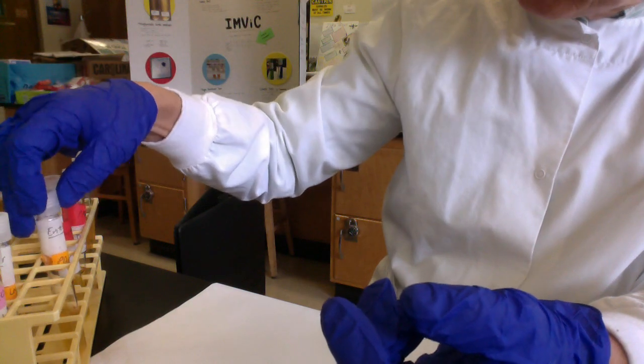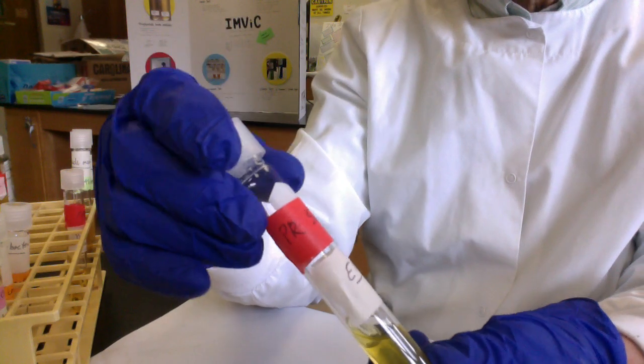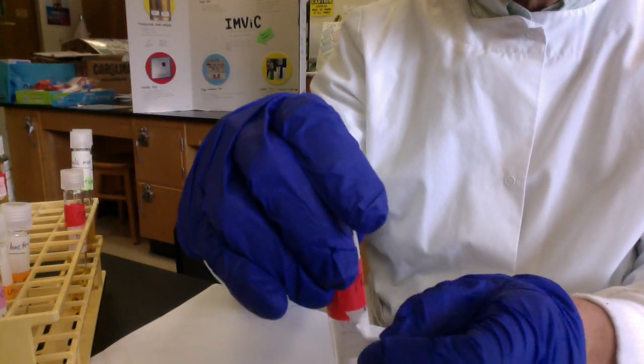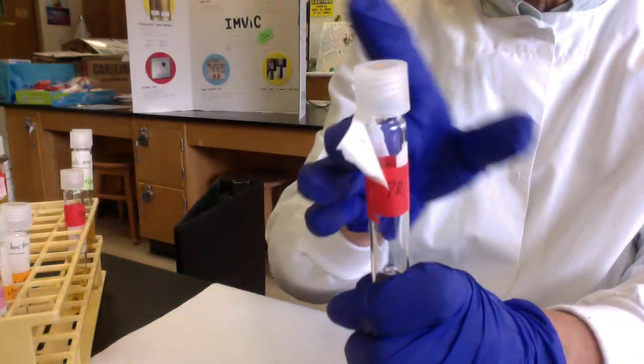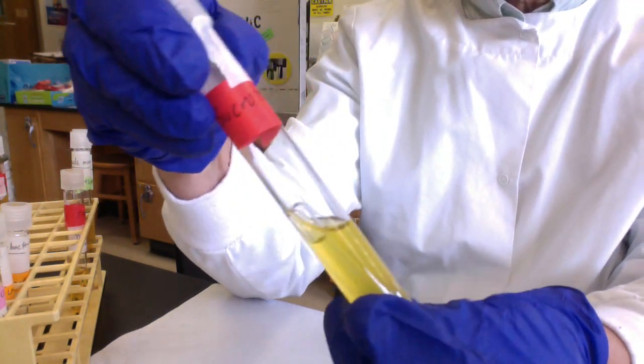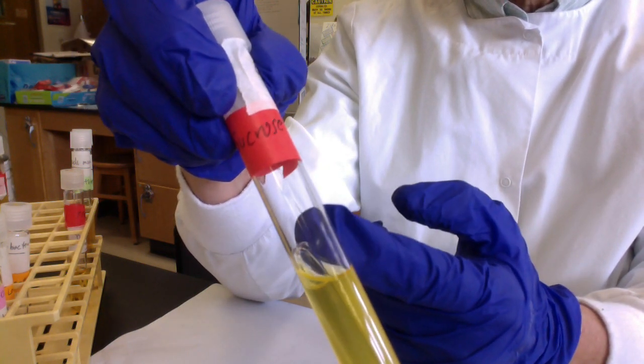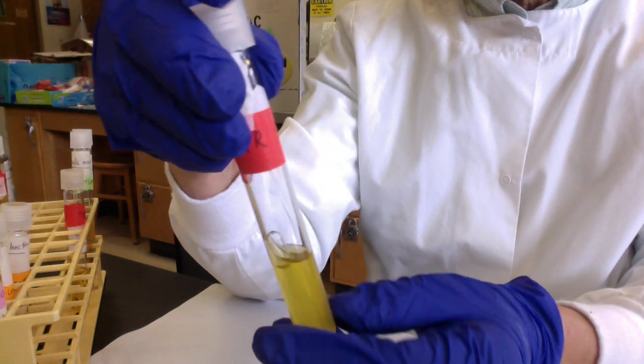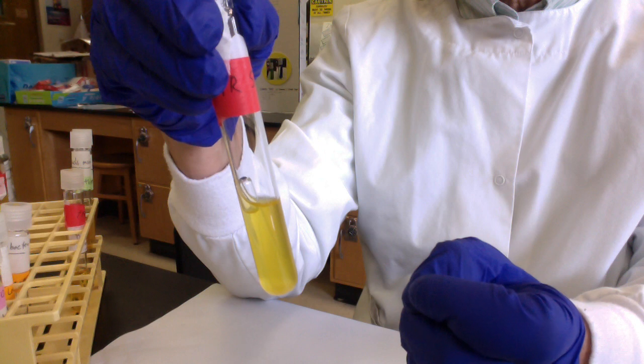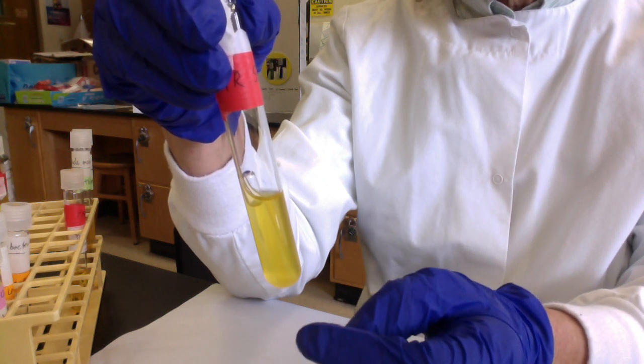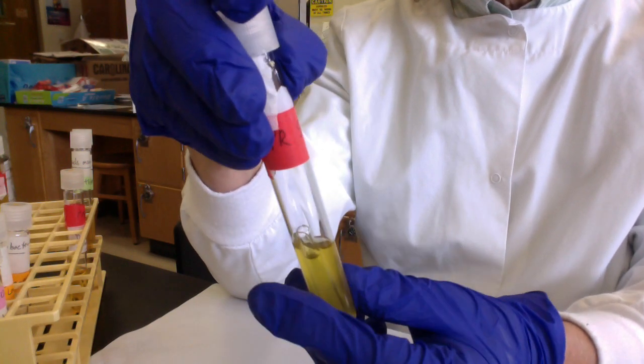Here we have E. coli in PR sucrose. E. coli must make sucrase because it fermented the sucrose. We'd score it A/+ for acid and gas. So E. coli can ferment glucose, lactose, and sucrose. E. coli makes beta-galactosidase to digest lactose and sucrase to digest sucrose.